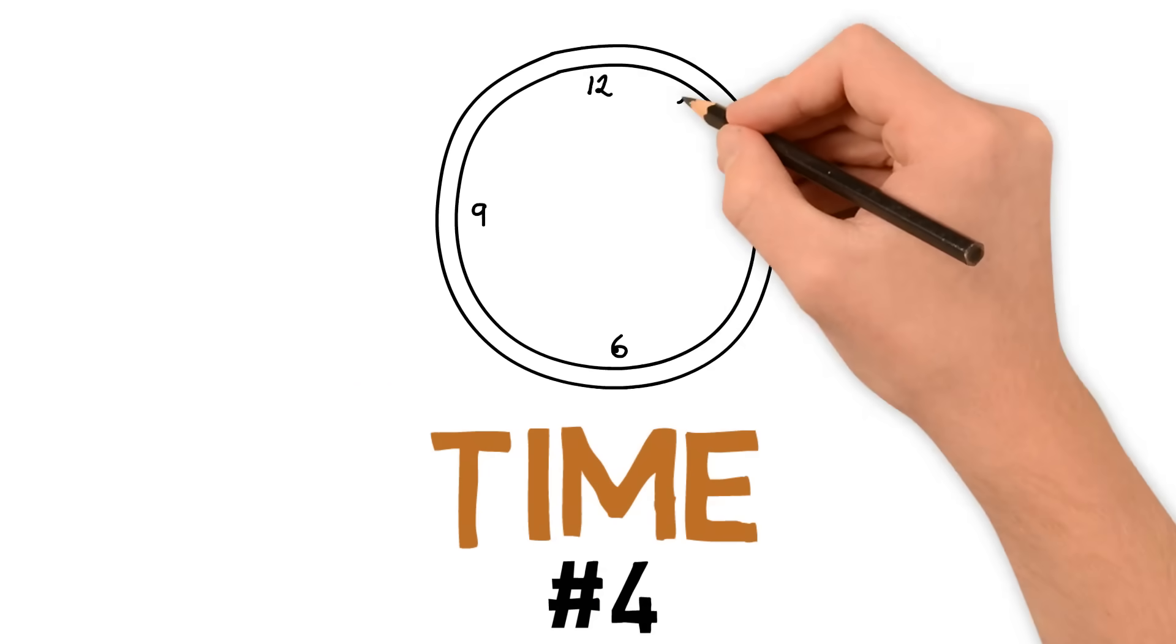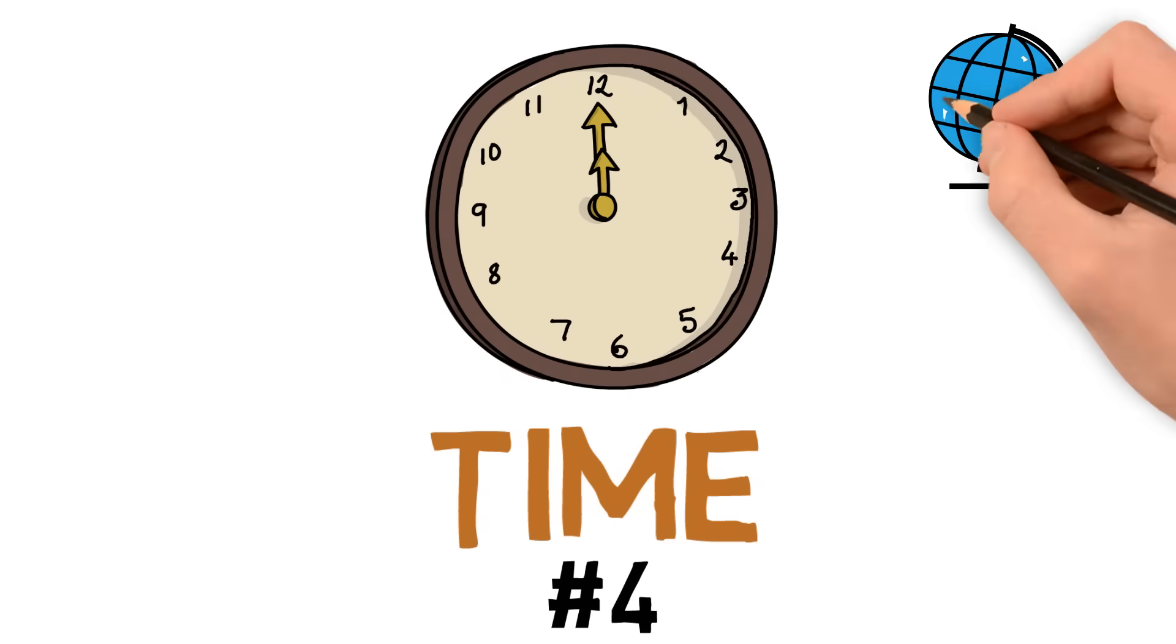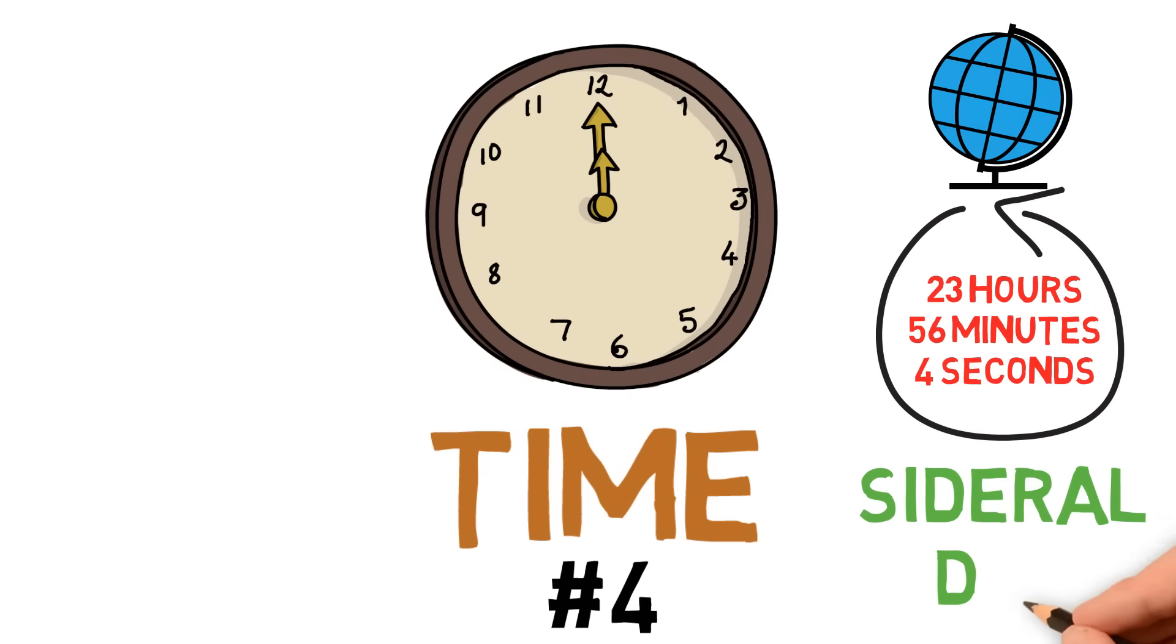Next, time. The Earth doesn't actually take 24 hours exactly to rotate on its axis. The actual time is 23 hours, 56 minutes and 4 seconds for its full technical day to go by, known as a sidereal day. I'm probably mispronouncing that.